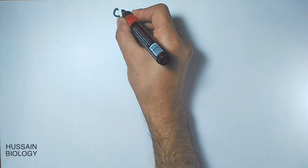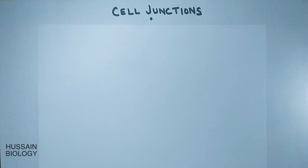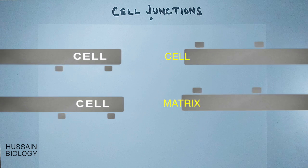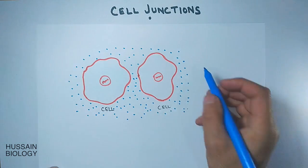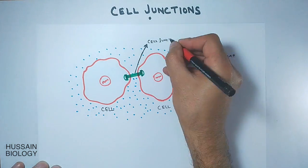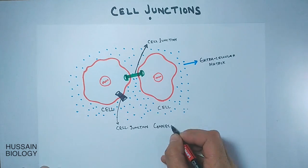In this video we will be discussing about cell junctions and its types. Cell junctions are the complex structures of proteins that exist between two cells or between a cell and an extracellular matrix. These cell junctions provide a bridge between cells or between a cell and a matrix for the purpose of communication, transport, signals, or even mechanical support. In this diagram you can see the two cells surrounded by extracellular matrix, and the structure connecting them — or connecting a cell to the matrix — is the cell junction.